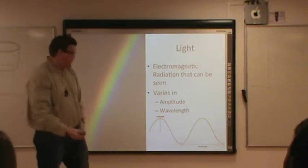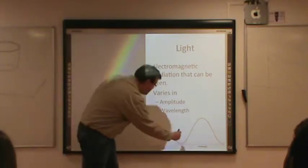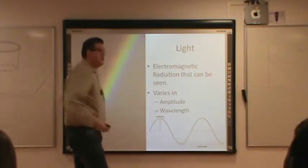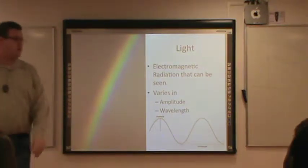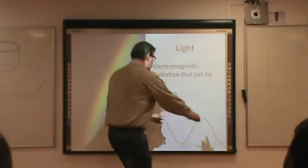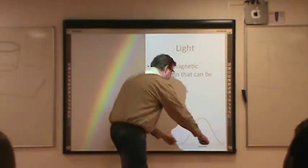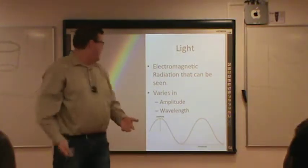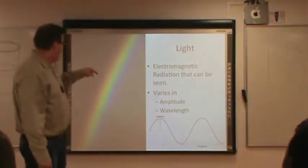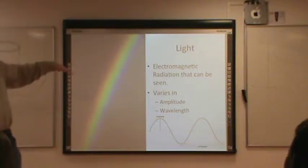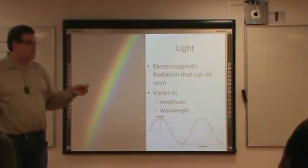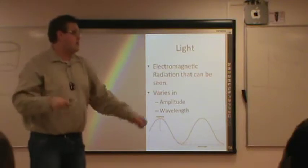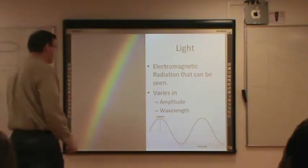Wavelength is the distance from one point in the wave to the same point one cycle away. You can measure it between the peaks or the valleys or the midpoints, and you get the same answer. So we have amplitude, which is height, and wavelength, which is the distance between two of the same points in that electromagnetic radiation.